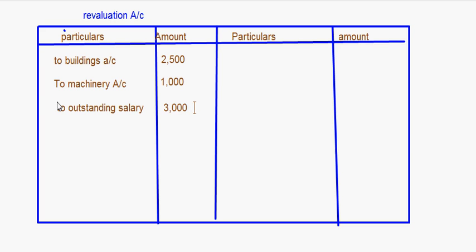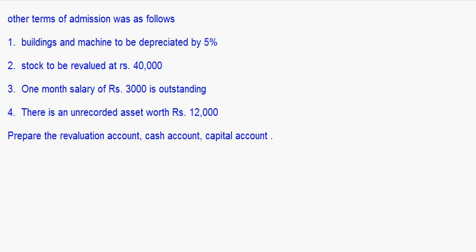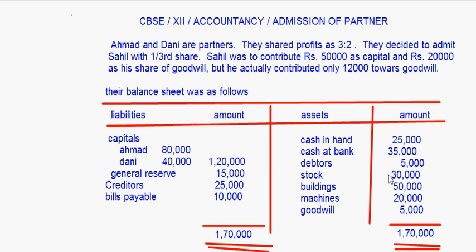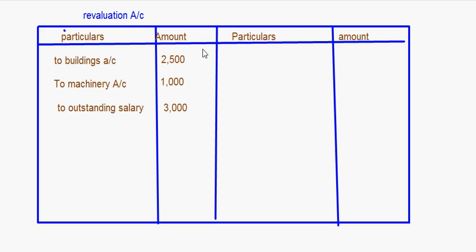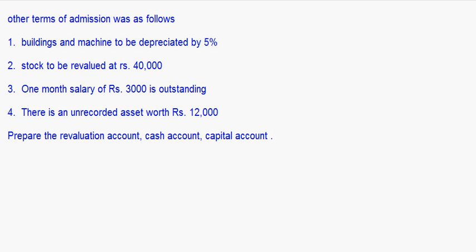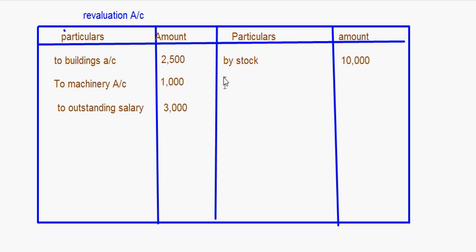There is an outstanding salary, so that will come on the debit side: 3,000 rupees. Then stock is to be revalued at 40,000. Looking at the balance sheet, stock is 30,000, which means stock is appreciating by 10,000. So we put stock 10,000 rupees on the credit side. There is also an unrecorded asset worth 12,000 rupees — that is an increase in asset — so we put by unrecorded asset 12,000 rupees.